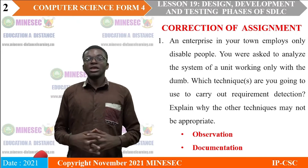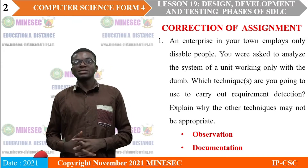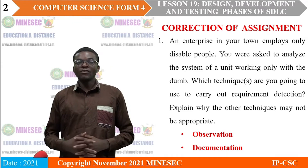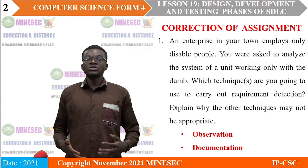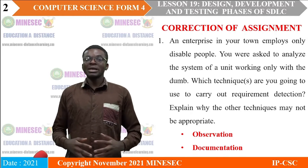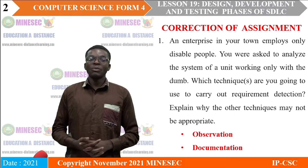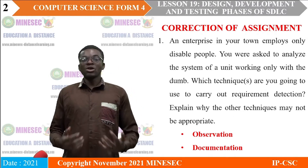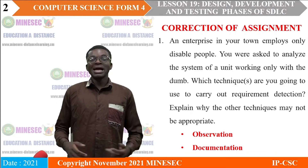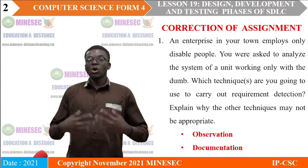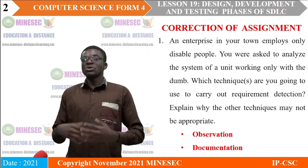An enterprise in your town employs only disabled people. You were asked to analyze the system of a unit working with only their dog. Which technique are you going to use to carry out requirement detection? The best techniques to use in this situation would be observation and documentation — that is, you observe how the workers in that unit work.